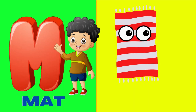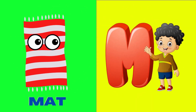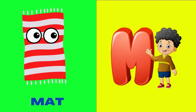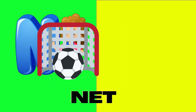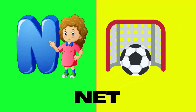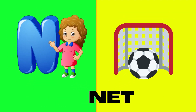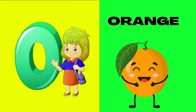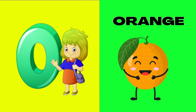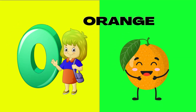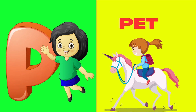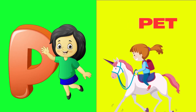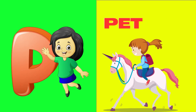M is for mat, m-m-mat. N is for net, n-n-net. O is for orange, o-o-orange. P is for pet, p-p-pet.